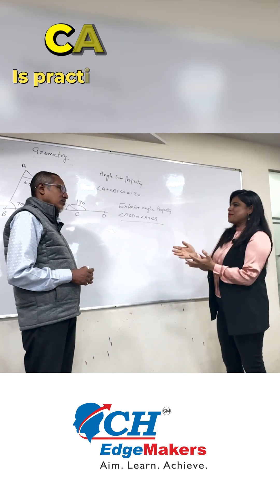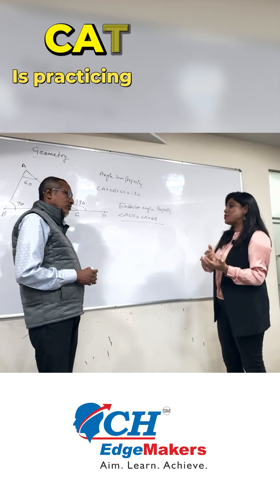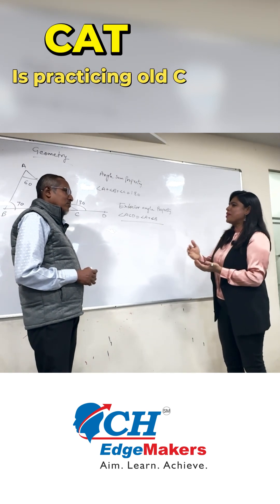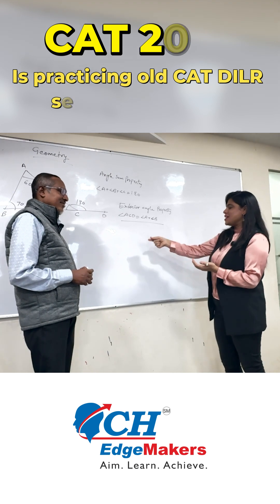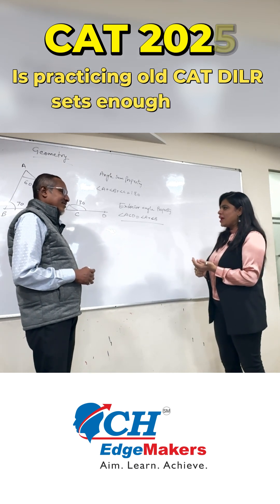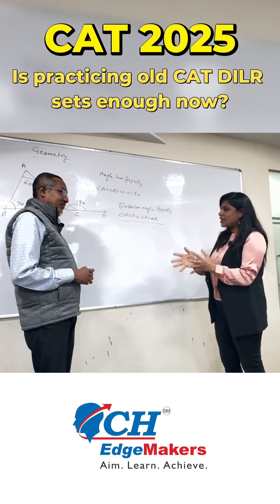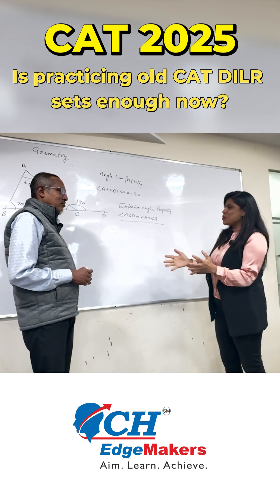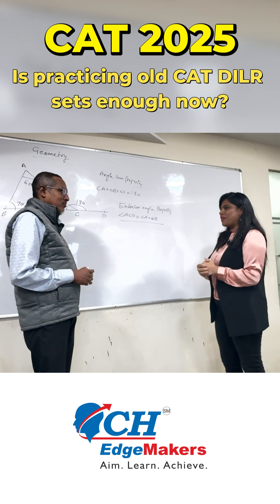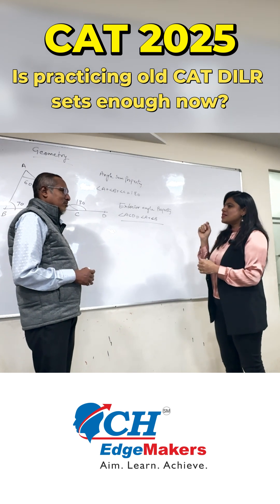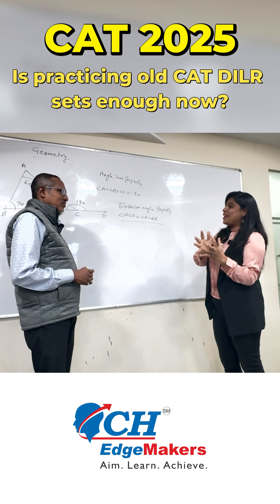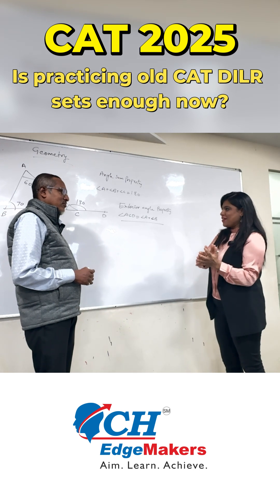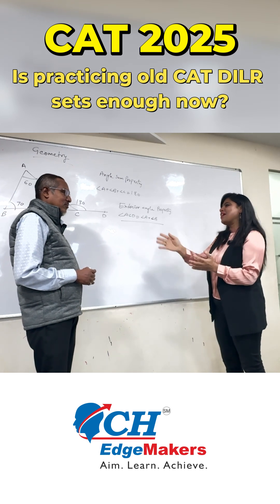There's one more thing I have been observing — for the last 2-3 years, whatever predictions you have done about the DILR, about which set to attempt and all that, it has been correct for all students and very helpful. So there's this question: will practicing old DILR sets of CAT be helpful for the students?